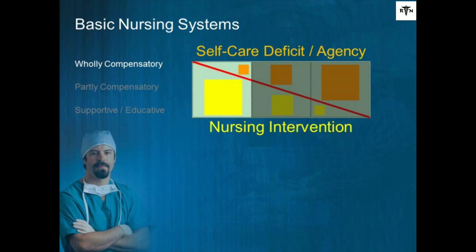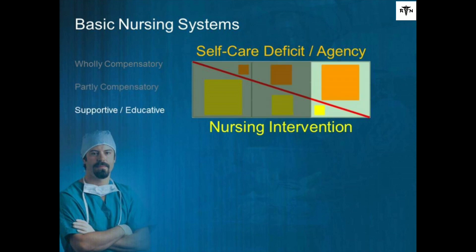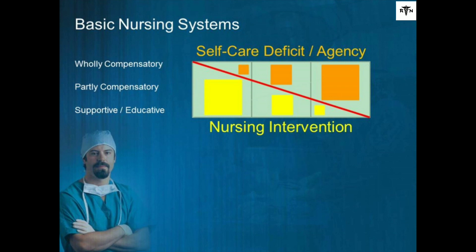Total or wholly compensatory involves total nursing care, with the patient unable to participate or do for themselves. Partial compensatory involves both the nurse and the patient sharing in self-care needs. Supportive and educative elicits the role of the nurse as a teacher or resource, where the patient is responsible for their own self-care. It is important to remember that a patient may fluctuate or move back and forth between systems throughout the course of their lives.